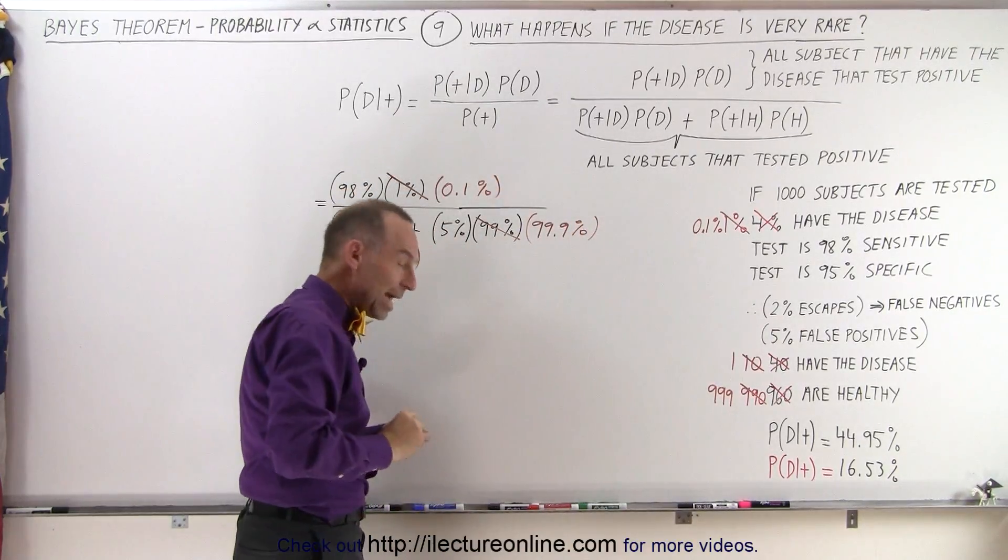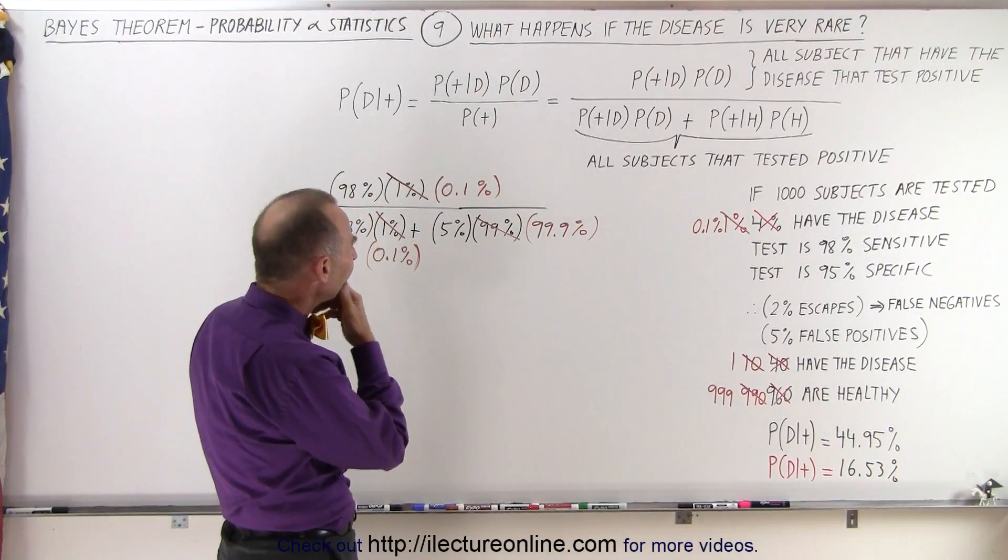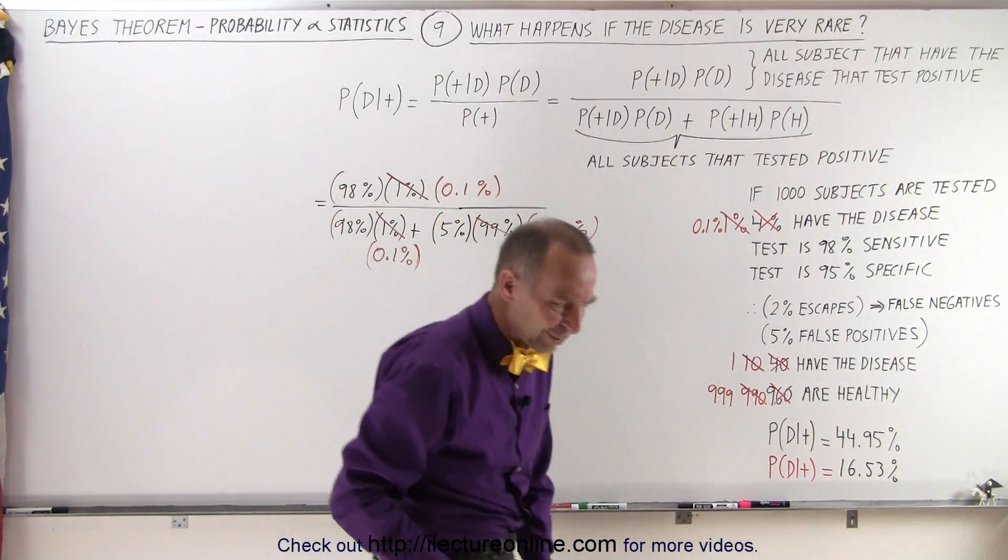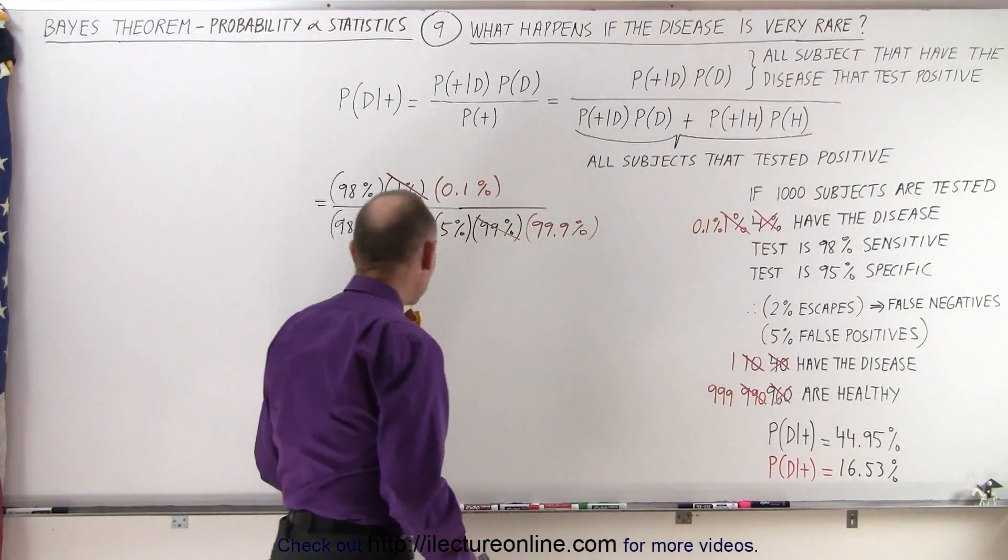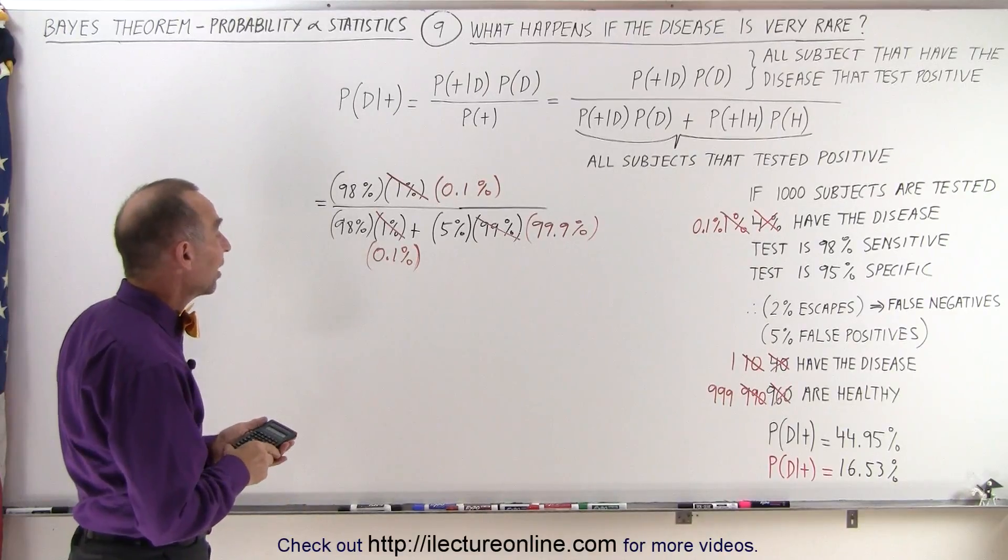And again, I would think that there would be a drop in the probability, but would it be a big drop? Well, let's see. Bayes' theorem is kind of an interesting thing, and not always things happen the way you would expect them to happen. So let's see what would happen in this case.